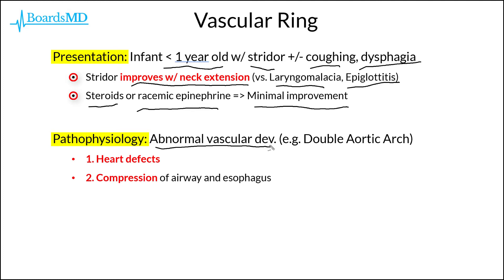One classic vascular anomaly that occurs in the case of vascular rings is the double aortic arch, which we will review in the coming slides. Because this is a case of abnormal vascular development, this can lead to two different problems: the first is heart defects, and the second is compression of the airway and the esophagus, thus leading to stridor.